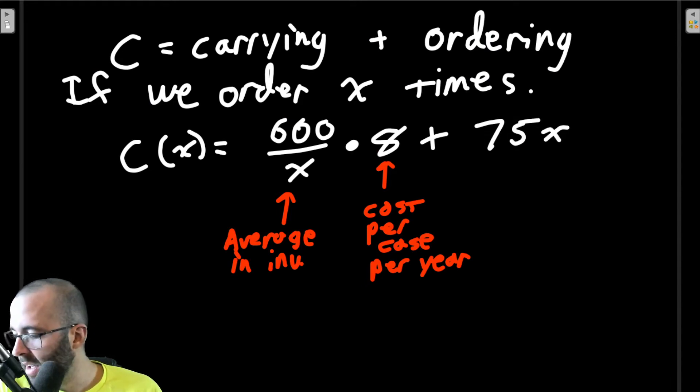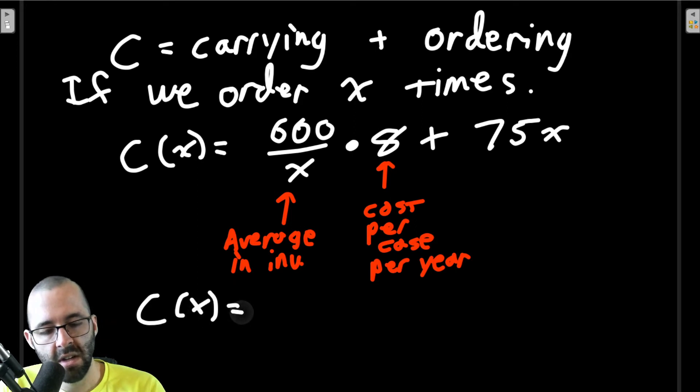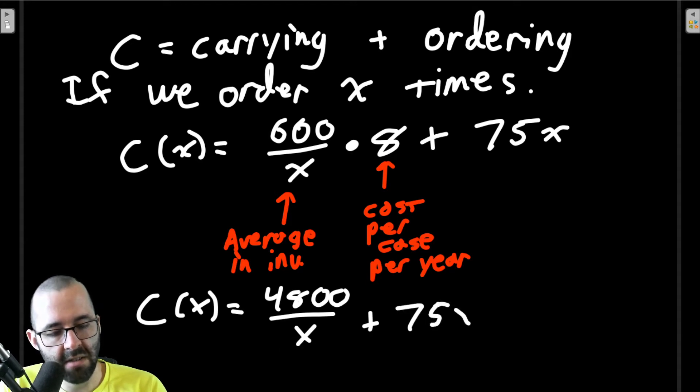And we can clean this up a little bit. This cost function, the first one is going to be 4800 over x just like we did in Example 1, the second one is 75x. So this is our cost function.